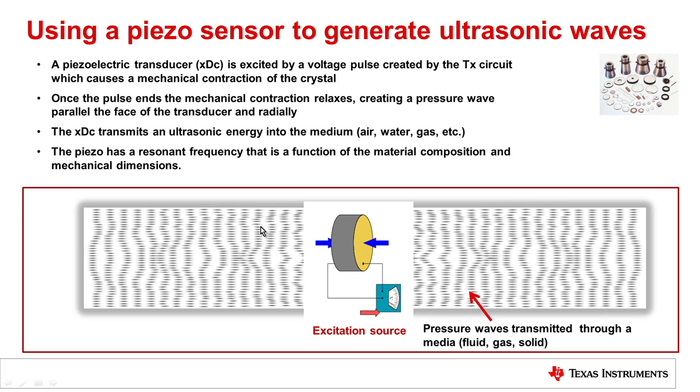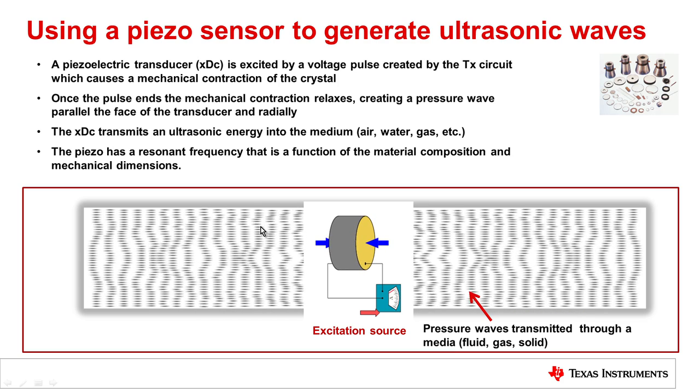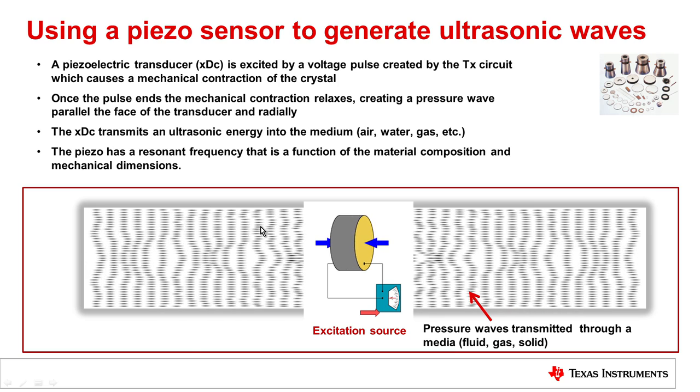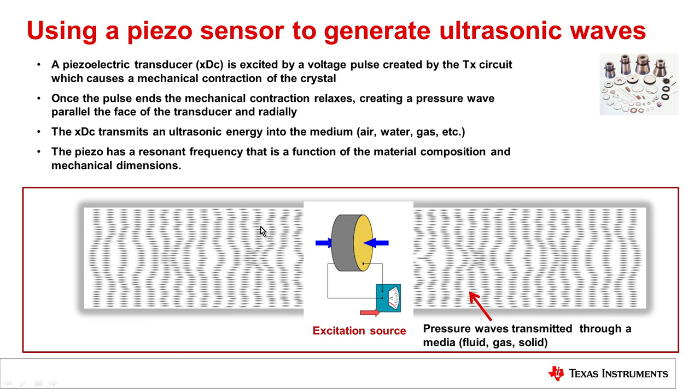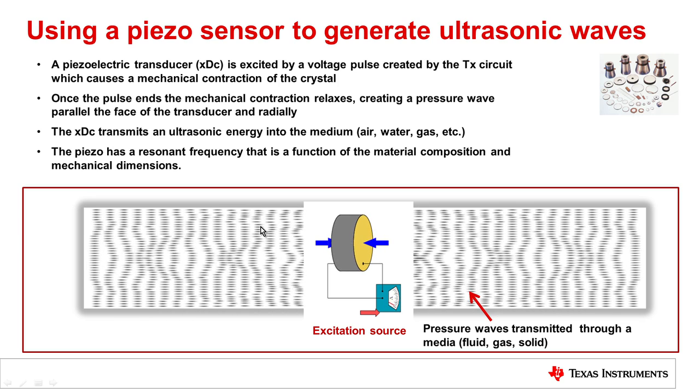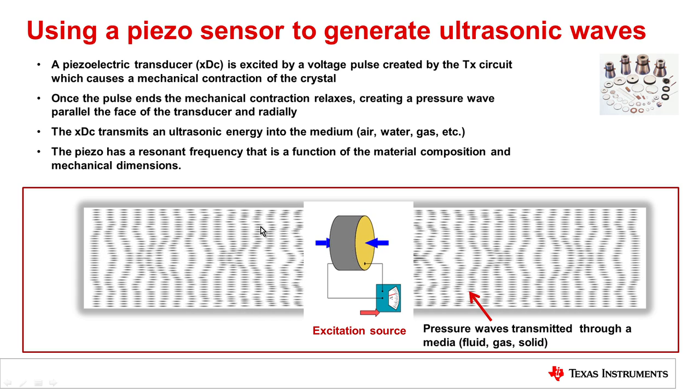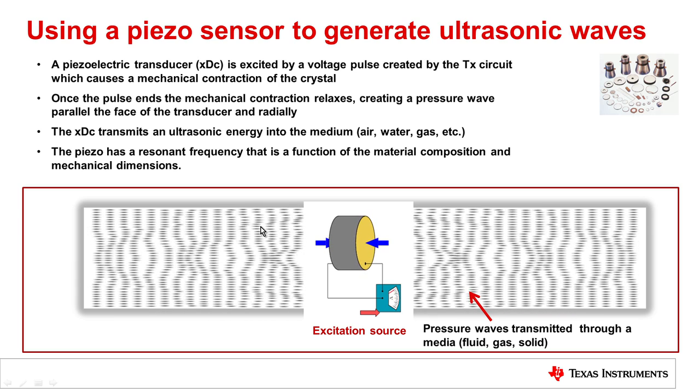Talking a little bit more about transducers, how do transducers work? Transducers are ceramic crystals that when you apply a voltage to them, they contract. Once that voltage is removed, that contraction stops and the expansion creates a pressure wave in the material that it's connected to.